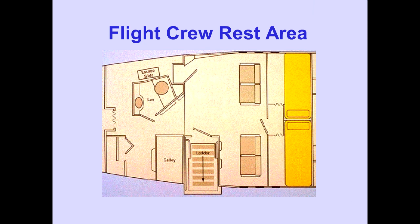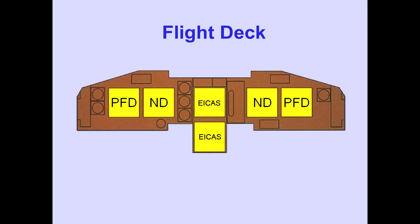The flight deck provides six cathode ray tubes or CRTs to display flight information, airplane systems, navigation, engine, and crew alerting information.